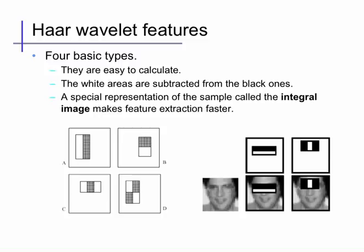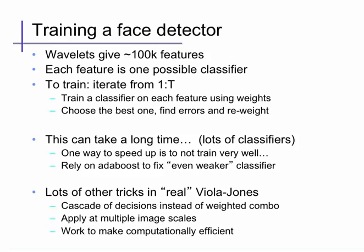These features are not too inefficient to calculate because you can pre-process the image to compute something called the integral image — the partial sum of the image up to a particular pixel in a rectangle to the upper-left of that point. The integral over some region, such as the white region we want to subtract, can be computed using just the four points at the corners of the pixels, and that gives us the sum in a region by the difference of those four points.